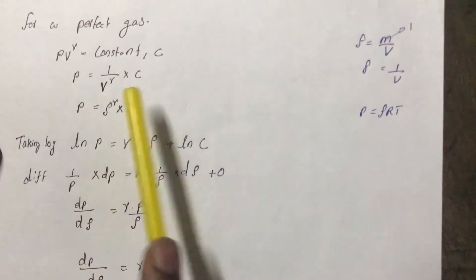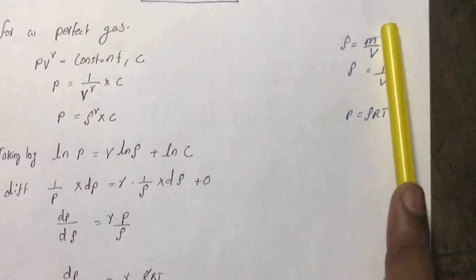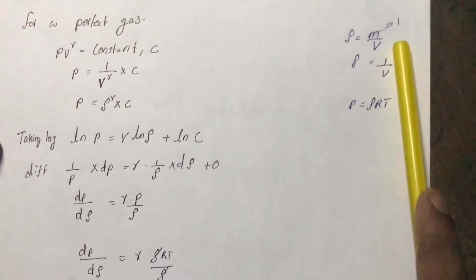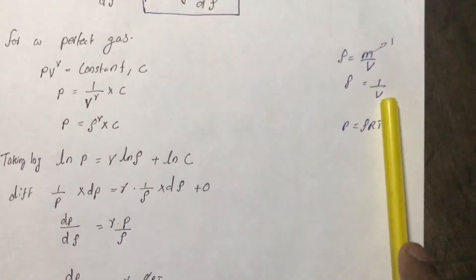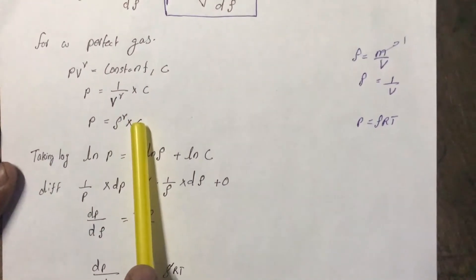1 by v, we all know that density is equal to mass by volume. Therefore, taking mass as unity, we can take density equal to 1 by volume. Therefore, our equation becomes p is equal to rho raised to gamma into constant.